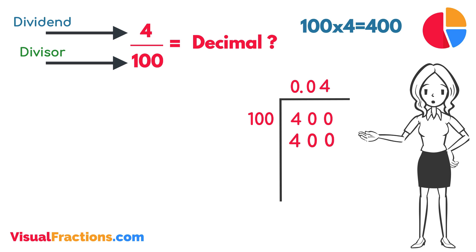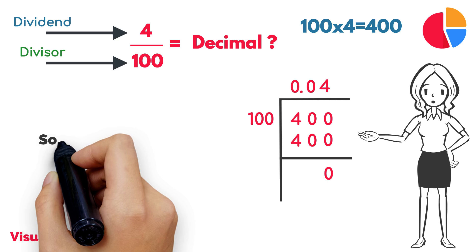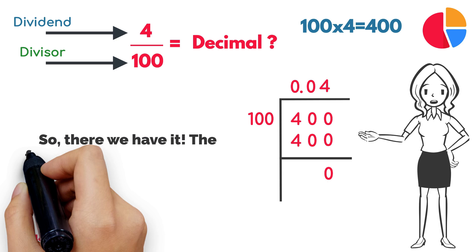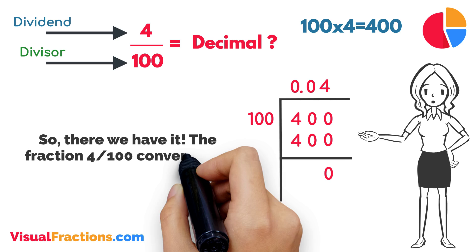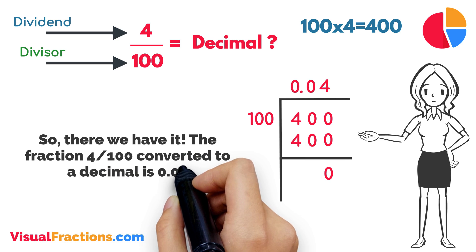Multiplying 4 by 100 gives us 400. When we subtract 400 from 400, we get a remainder of 0. So, there we have it. The fraction 4 one-hundredths converted to a decimal is 0.04.